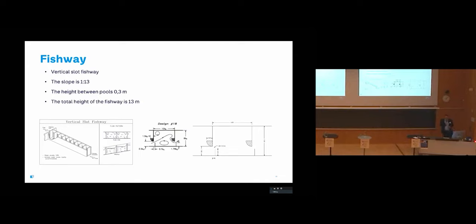The fishway in River Hvammur is a vertical slot fishway. It has a low slope, 1 to 13. The height between pools are 0.3 meters to allow resident trout to travel up and down. The total height of the fishway is 13 meters.